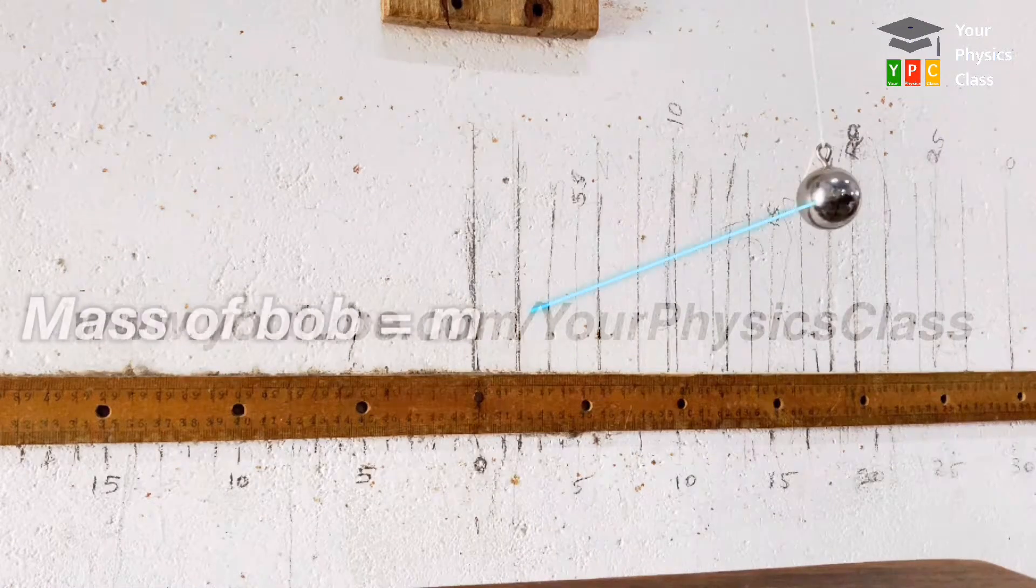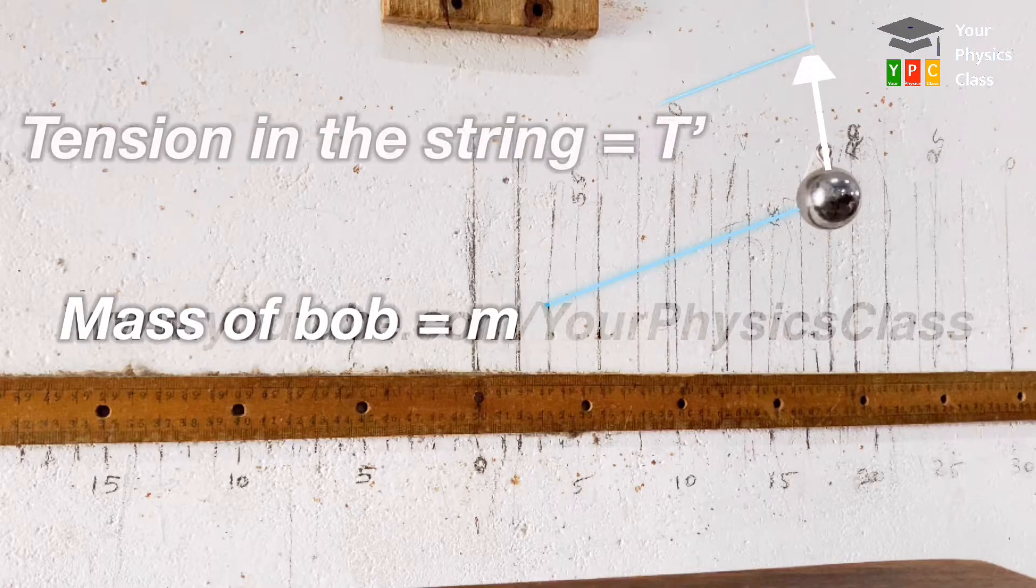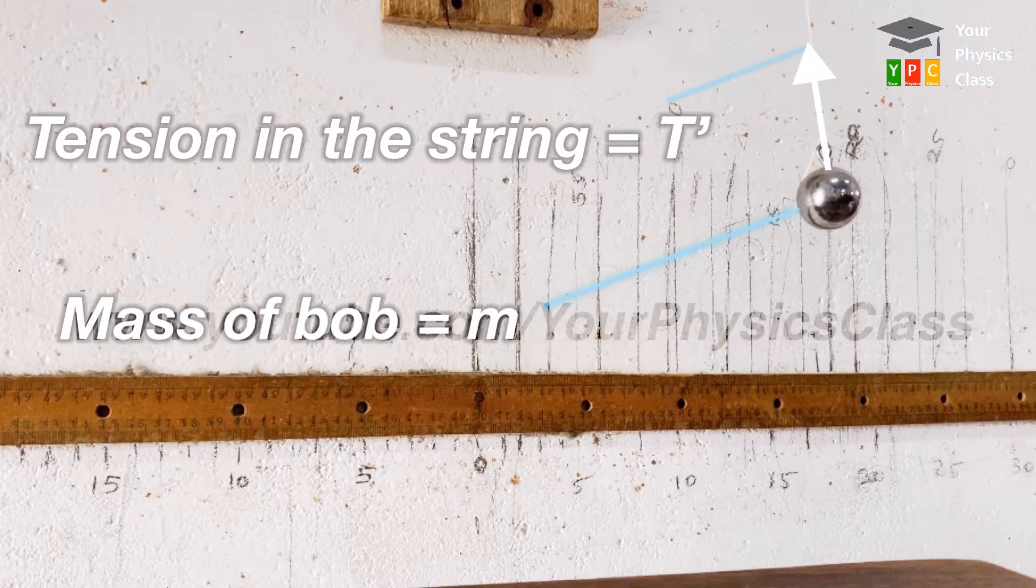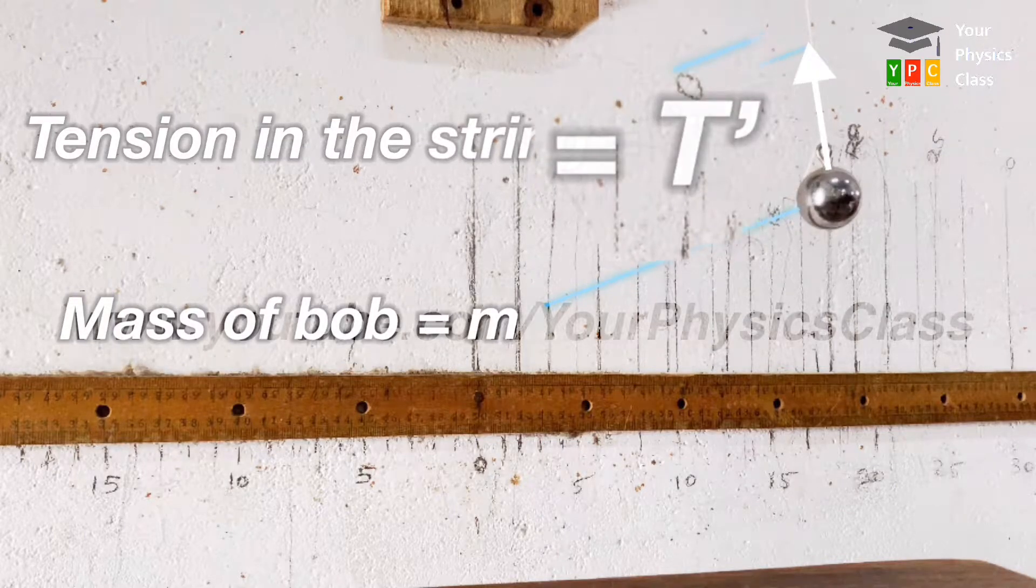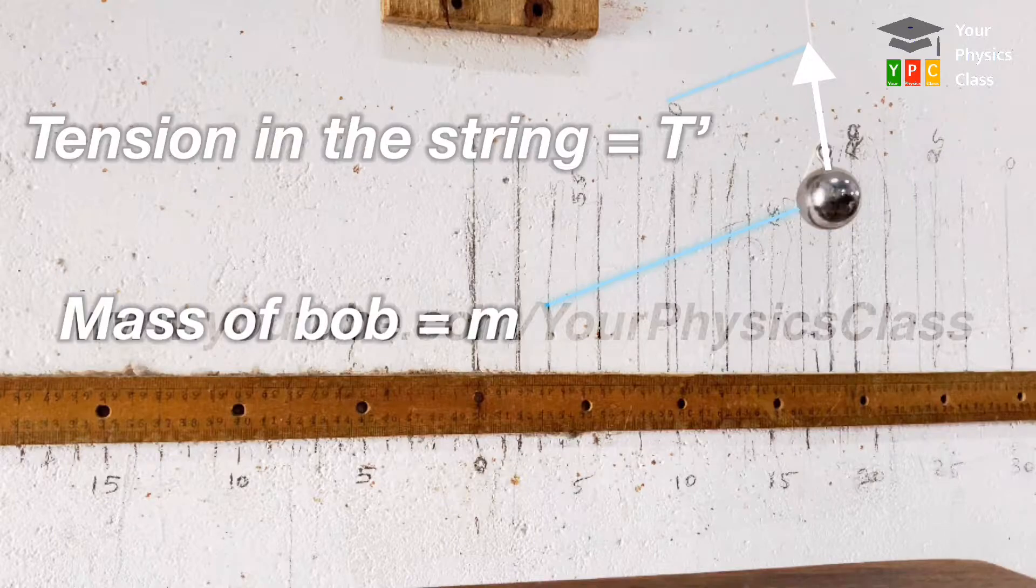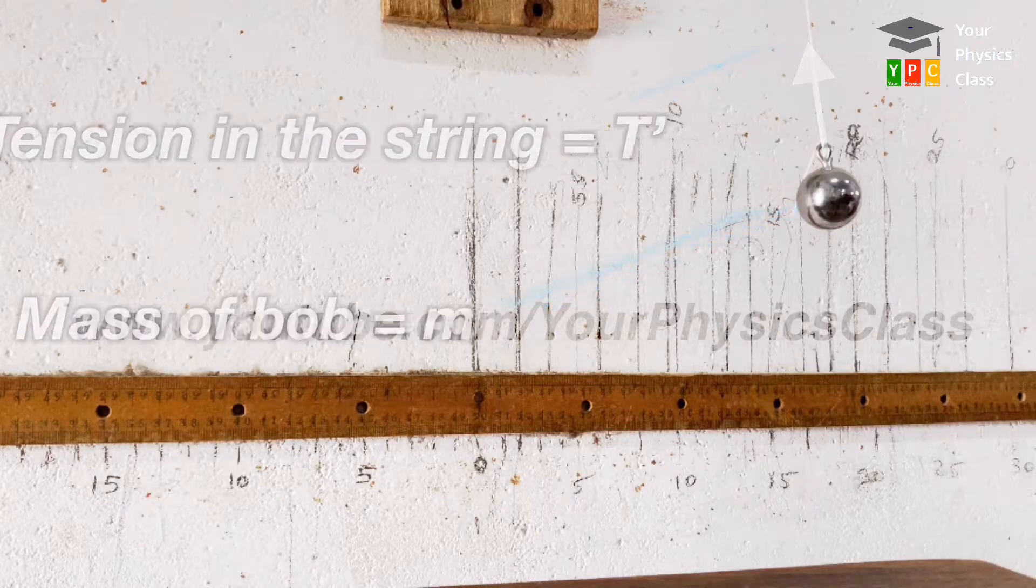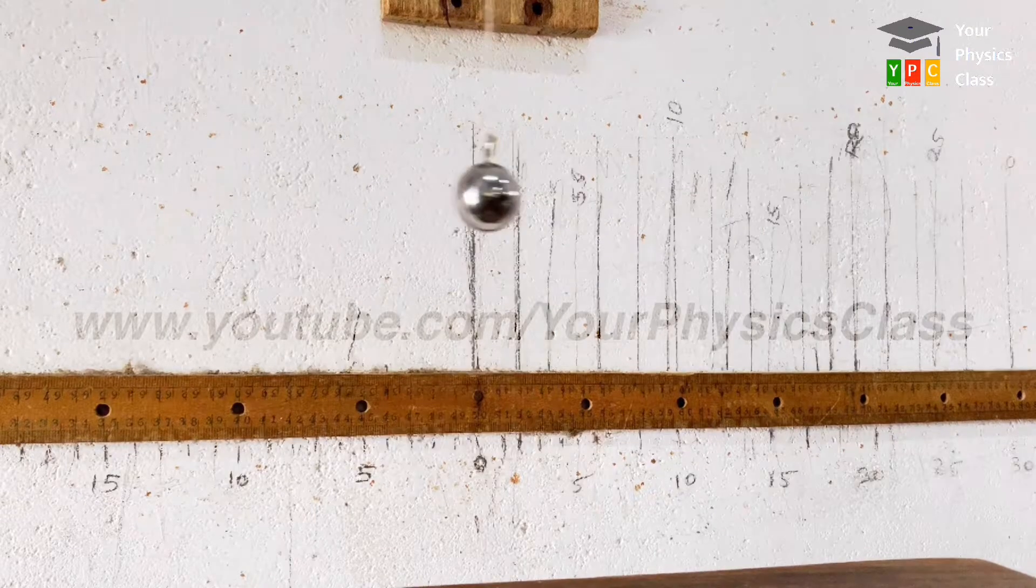Let m be the mass of the bob and T' the tension in the string. Friends, the reason for showing tension as T' instead of T is that ahead we need to show the period of pendulum as T.